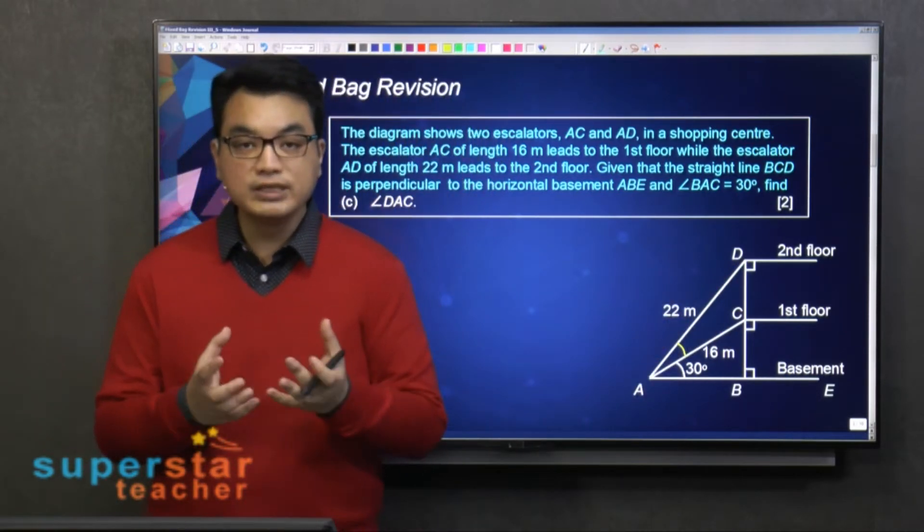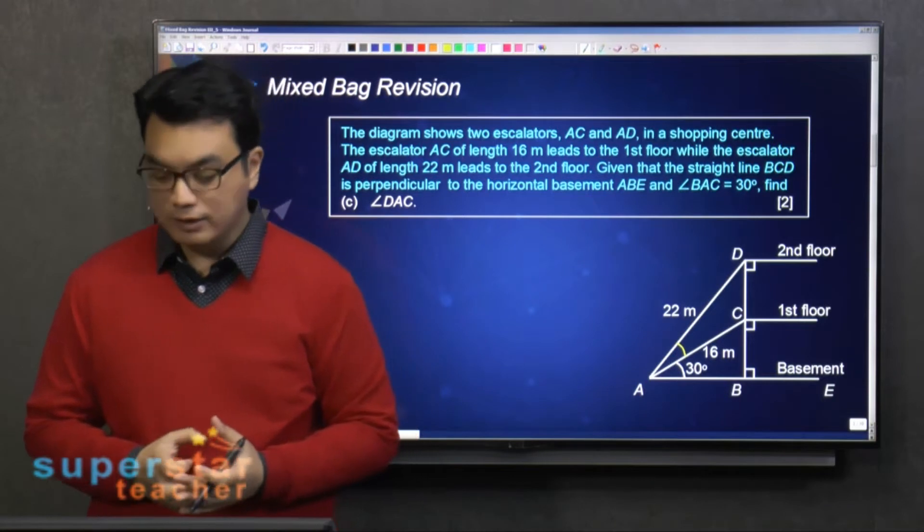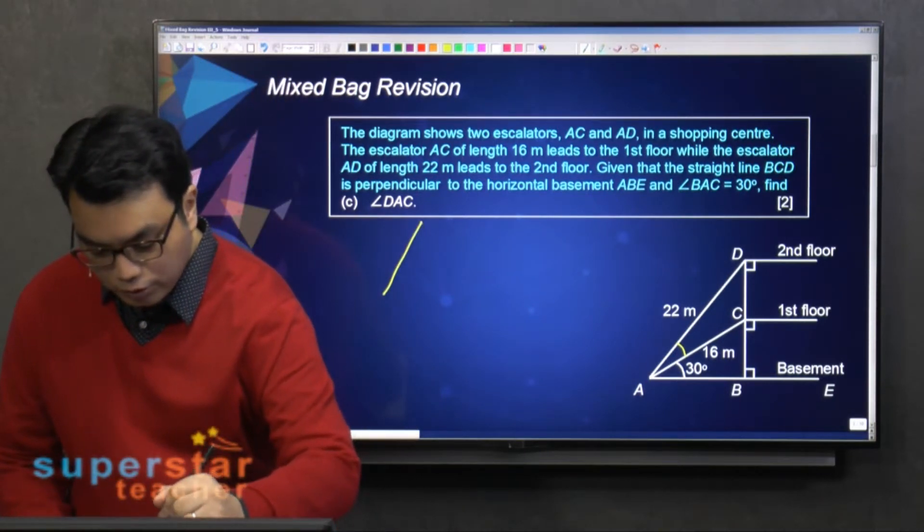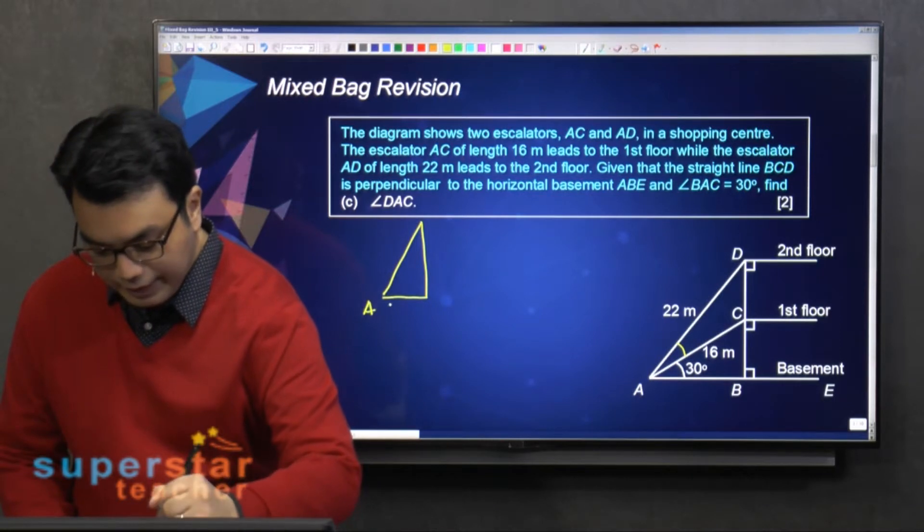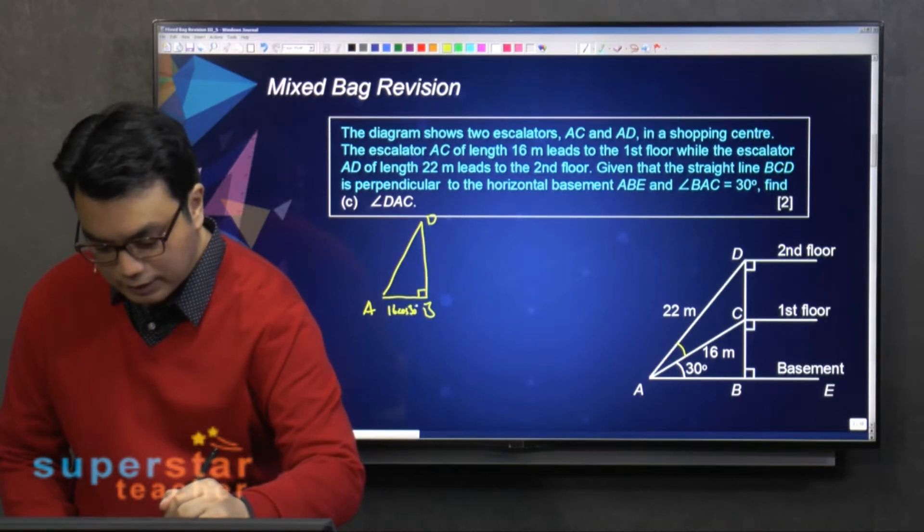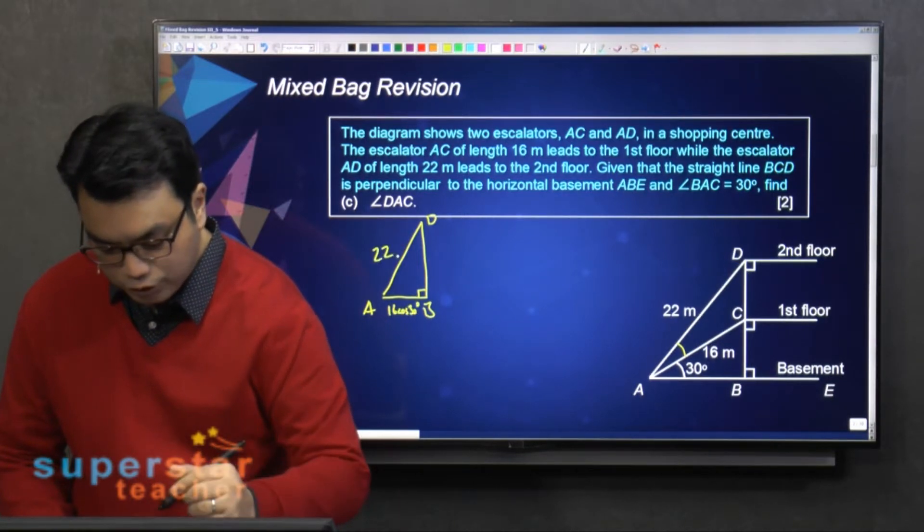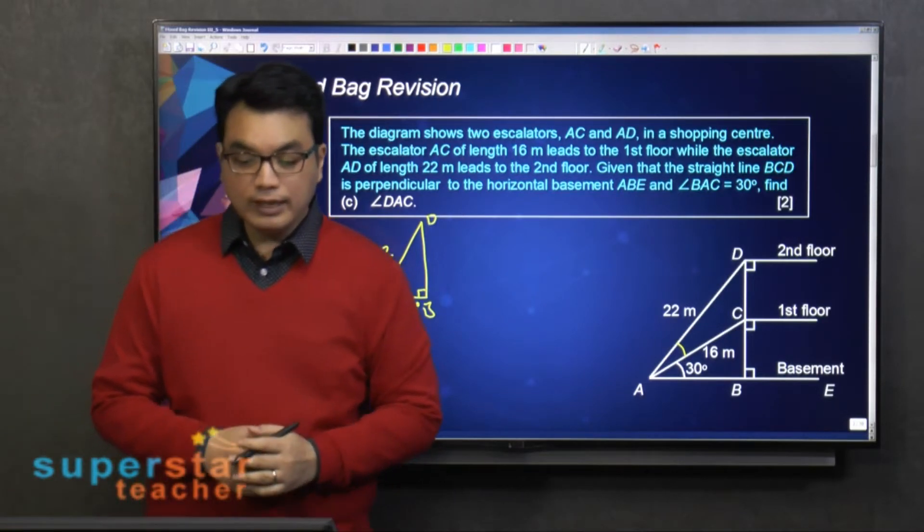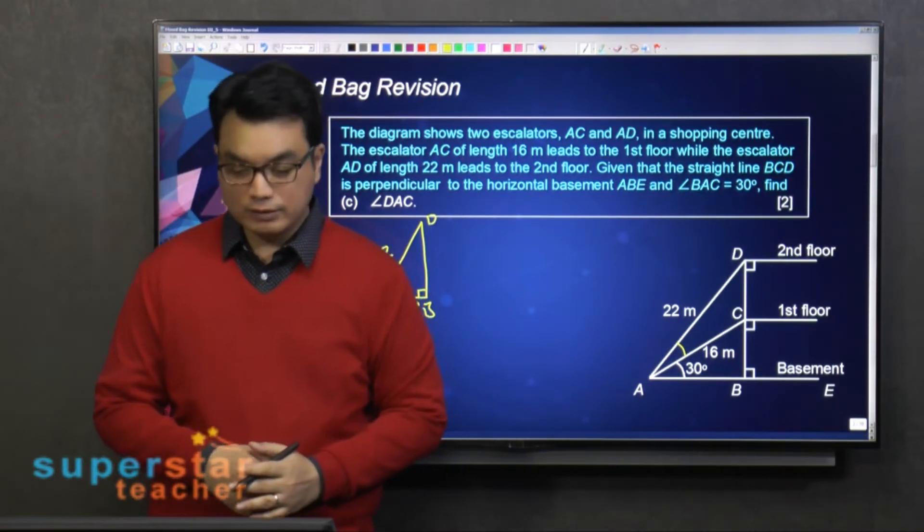So we need to use a right-angled triangle to find the angle. So what we can do is to use right-angled triangle ABD. Alright? So this is 16 cosine 30 degrees. This is 22. So we can find angle DAB first. Alright?